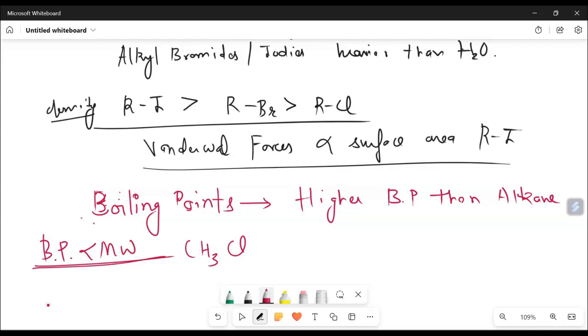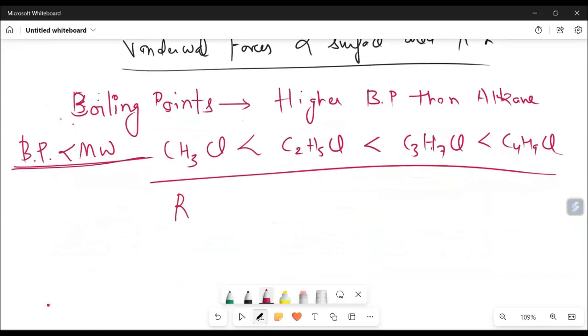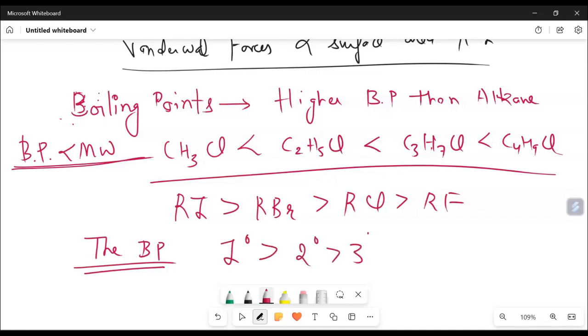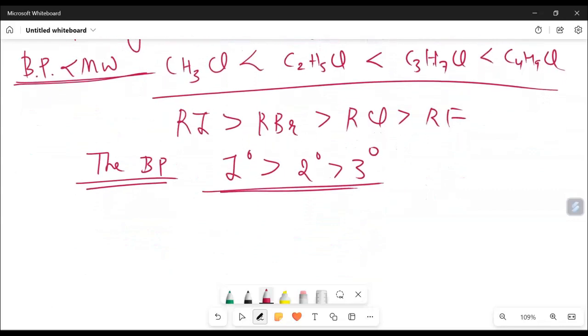The more the boiling point is directly proportional to molecular weight and inversely proportional to branching. So we can say that if you have compound CH3CL, it has less boiling point than C2H5CL, C3H7CL and C4H9CL. More the molecular weight, more will be the boiling point. And in case of RI, RBR, RI has the strongest boiling point than RBR, then RCL, then RF. Primary has more boiling point than 2 degree, then 3 degree. It means 1 degree carbon has more boiling point, then 2 degree, then 3 degree chlorides, bromides, whatever.